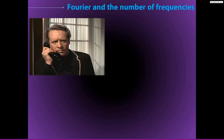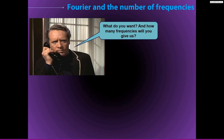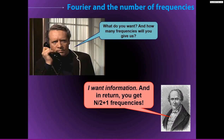Our friend Patrick McGowan asks Fourier how many frequencies the transform will give us. Fourier answers: you get n over 2 plus 1 frequencies, where n is the number of time points in the original time domain signal. This may seem like a strange number, so let's think about what it means and why it makes sense.